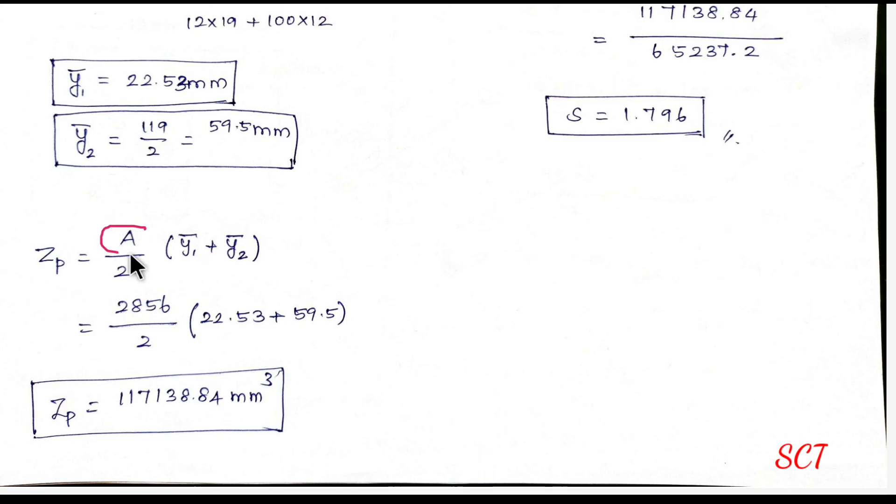ZP formula. ZP formula. Total area is 2856. Y1 bar, y2 bar is equal to value ZP is equal to 117138.84 mm cube. This is mm cube. Now,